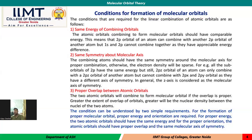The combining atoms should have the same symmetry around the molecular axis for proper combination; otherwise, the electron density will be sparse. For example, 2s and 2s must have similar symmetry about the molecular axis. For p orbitals, although all p orbitals have similar energy, the 2pz orbital of one atom can only combine effectively with the 2pz of another atom, because both have similar molecular axis symmetry. The 2px and 2pz have different molecular axis symmetry and cannot combine effectively.